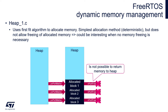We will start from the simplest one, heap1. All functions supporting this memory management scheme are located within the heap1.c file. It uses the First Fit algorithm to allocate memory. It is the simplest allocation method — deterministic but it does not allow release of allocated memory. It could be useful in situations where no memory release is necessary, such as when all FreeRTOS components are created at the beginning and no structural changes are made afterward.